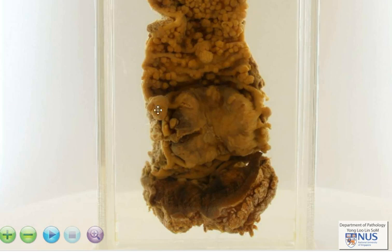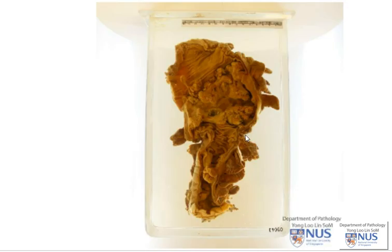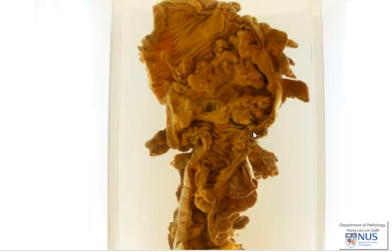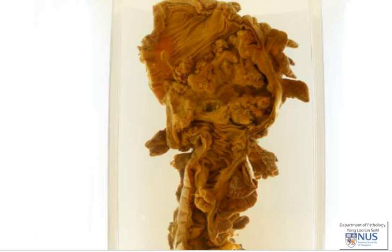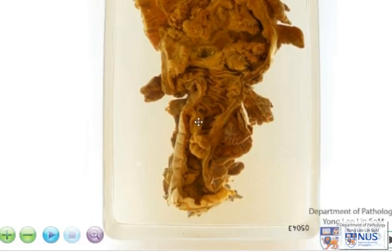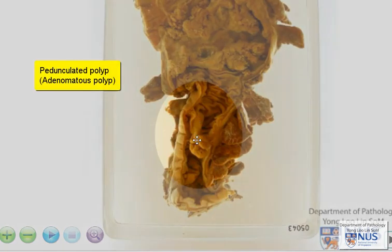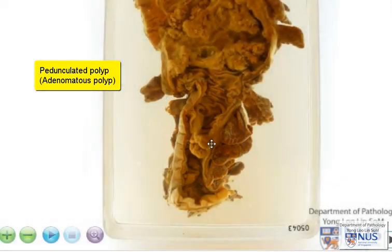Now let's have a look at another different case. Here we have a segment of large bowel as well, and we can see clearly that there is a fungating irregular tumour - this is adenocarcinoma. But if you look in this area, you can also see that there is a single pedunculated polyp. Here is the head of the polyp and this is the stalk of the polyp.